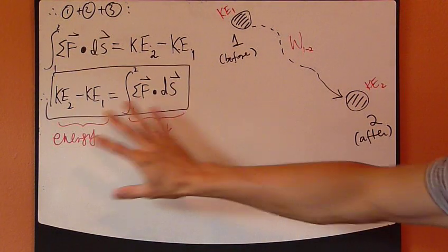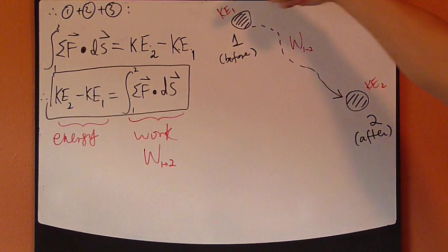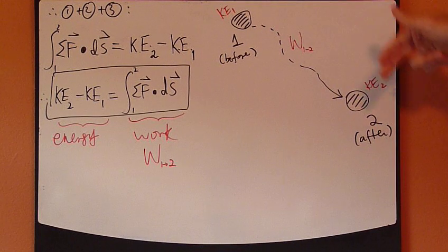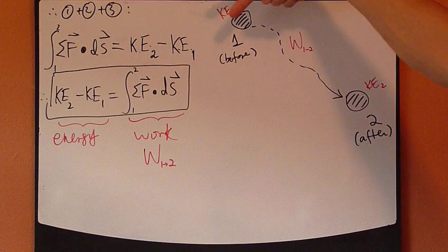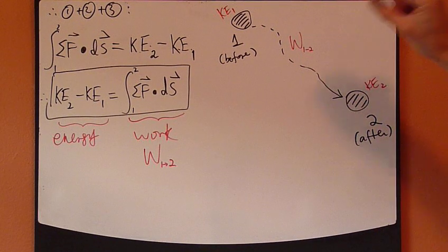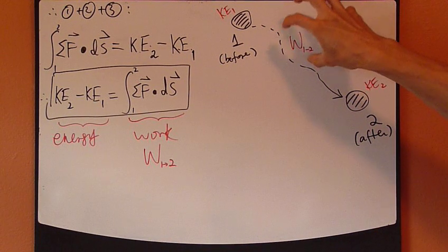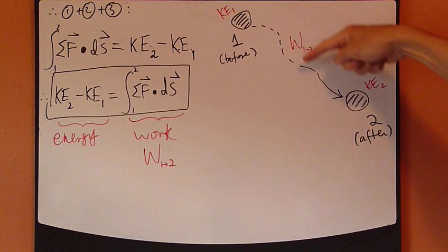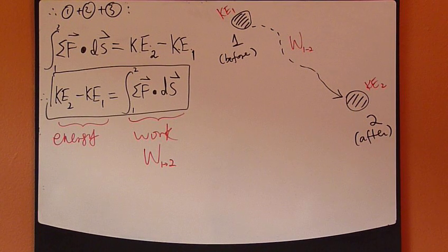So this work energy equation tells us that the change in kinetic energy between position one and two is equal to exactly the amount of work that's being done going from one to two.